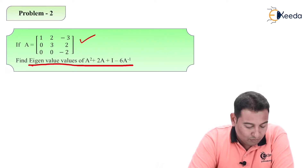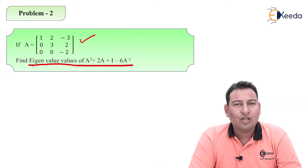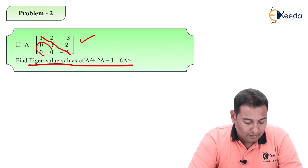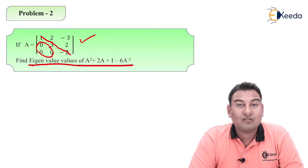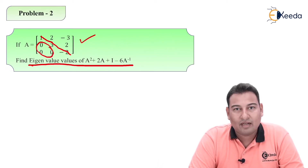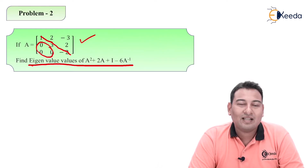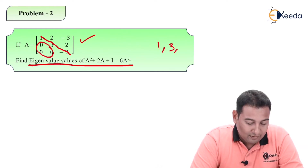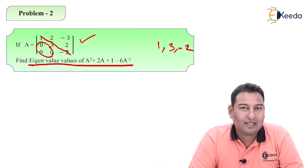First of all, check whether this matrix is triangular or not. Triangular means two types: upper triangular or lower triangular. Below the diagonal, everything is 0, so this matrix is an upper triangular matrix. Since the matrix is upper triangular, its eigenvalues are the same as the diagonal elements: 1, 3, and minus 2.